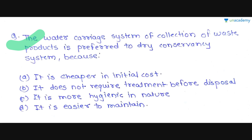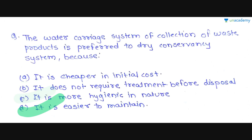The first question is: 'The water carrier system of collection of waste products is preferred to the dry conservancy system when —'. The options are: Option A — it is cheaper in initial cost; Option B — it does not require treatment before disposal; Option C — it is more hygienic in nature; Option D — it is easier to maintain.